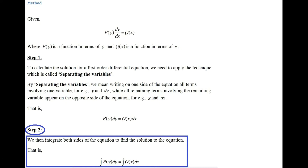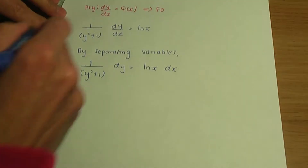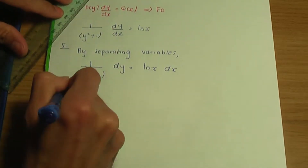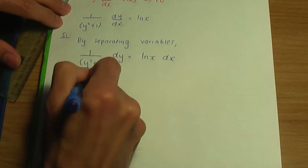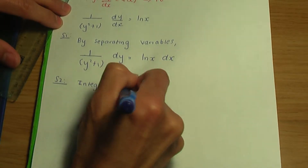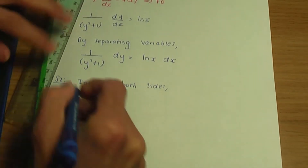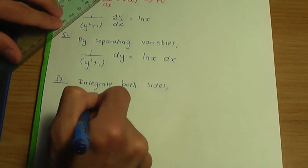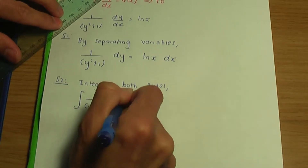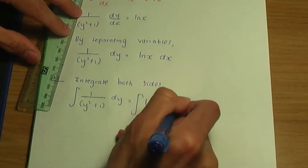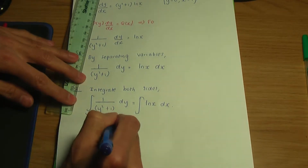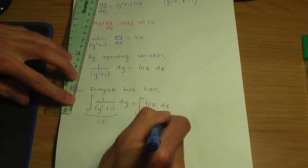Step number 2: we integrate both sides of the equation to find the general solution. So we integrate the left hand side — the integral of 1 over (y squared plus 1) with respect to y — and the right hand side — the integral of ln x with respect to x. Let me call these integral number 1 and integral number 2 respectively, and work through each as a side calculation.